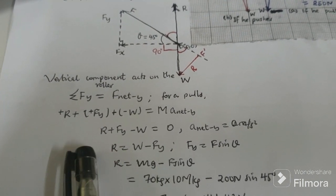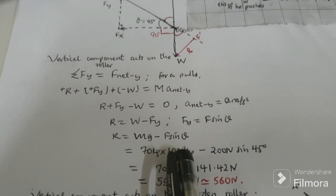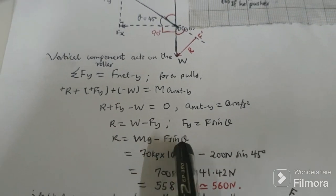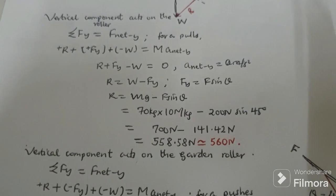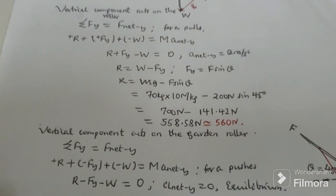The garden roller, then we have as you can see here below, F is F sin theta. Then our R, that is our vertical force, is equal to approximately 560 newtons.